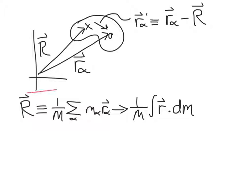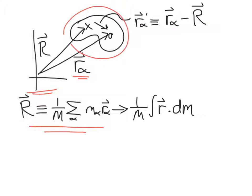If we have a coordinate system hanging arbitrarily in space, and a mass with some arbitrary shape, the position of each element of that mass, alpha, is given by r_alpha. So this represents the position of the alpha-th particle within that mass. The center of mass for the whole system is defined as this sum: you take each of the particles with their masses, multiply by the position vector for that particle, make the sum, and then divide through by the total mass.